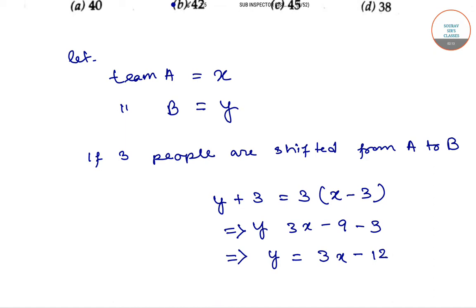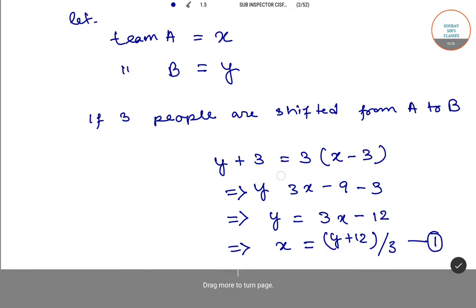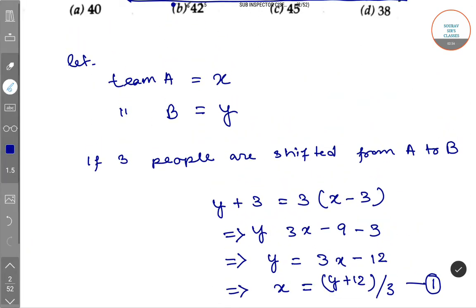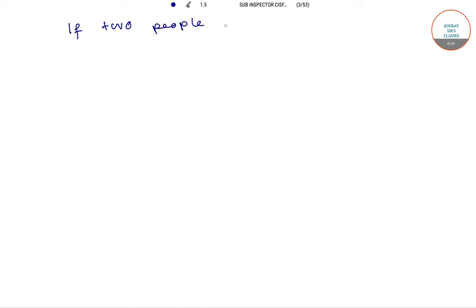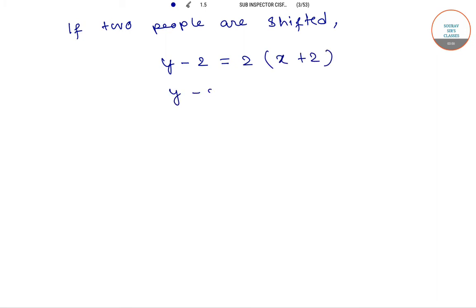From this we can also get x, that is x equals y plus 12 divided by 3. Suppose this is equation number one. Now for the second condition: if two people are shifted from Team B to Team A, then y minus 2 equals 2 times x plus 2, which gives y minus 2 equals 2x plus 4, and so y equals 2x plus 6.